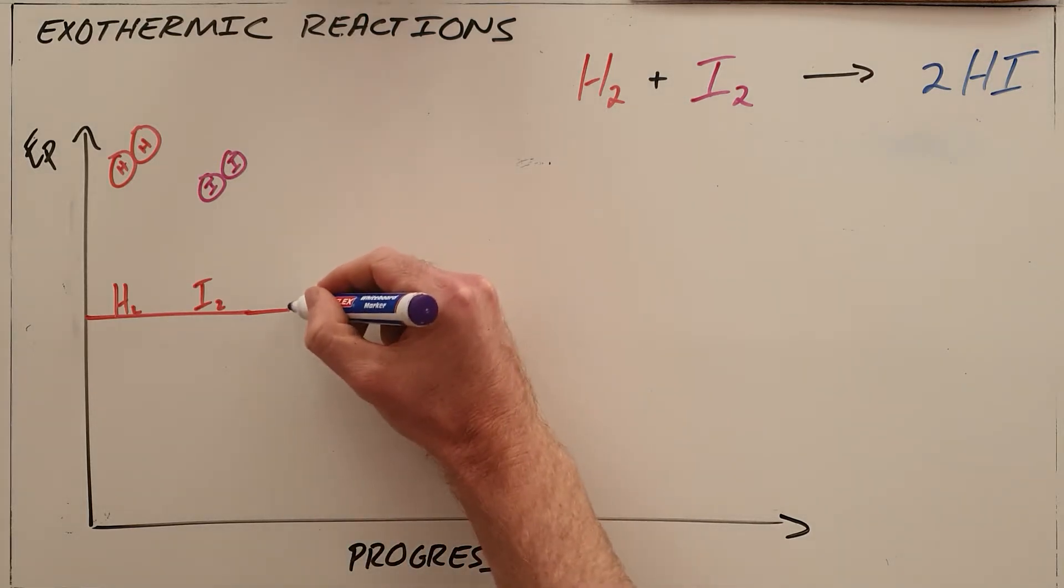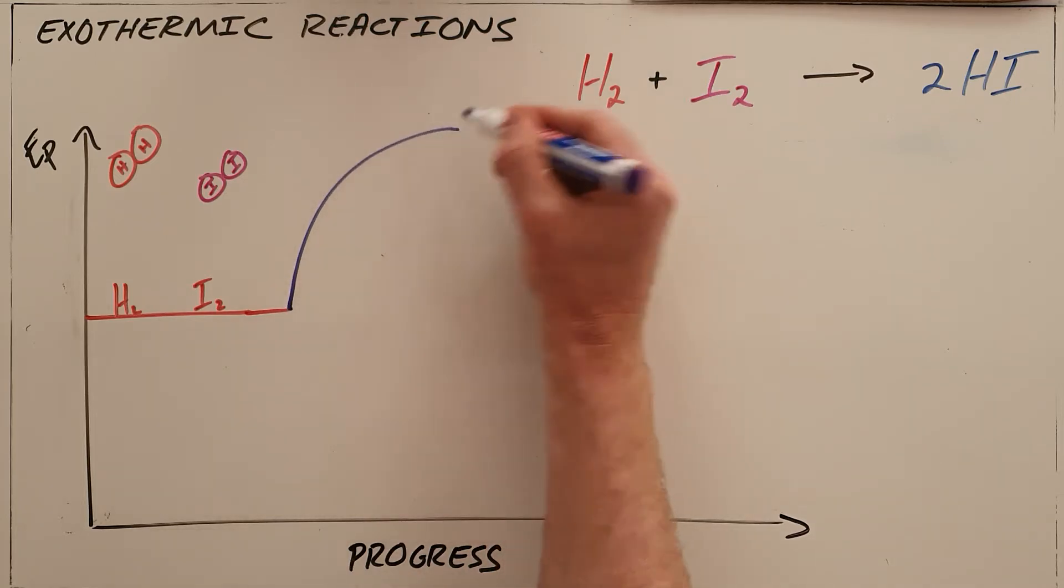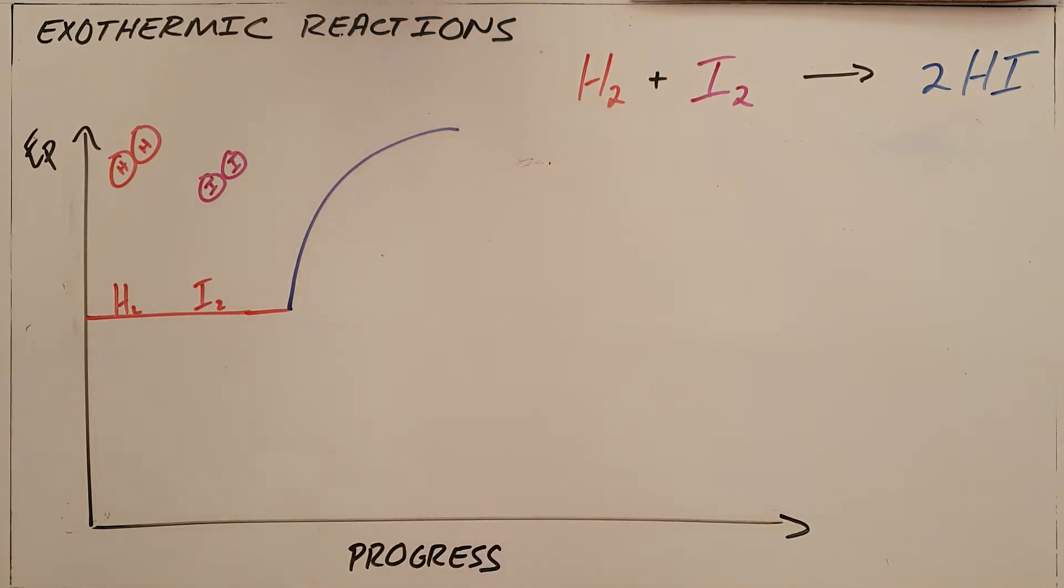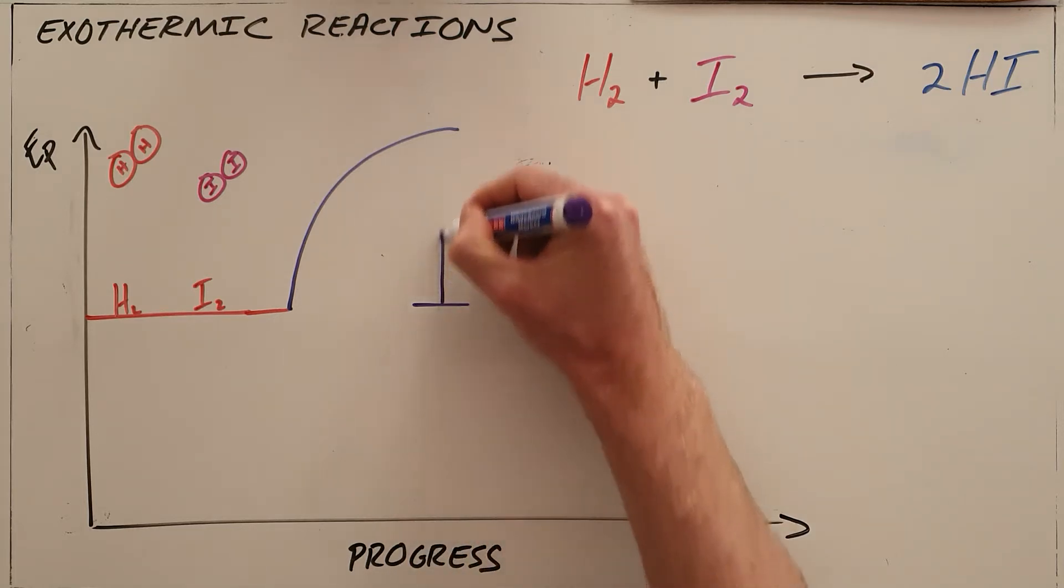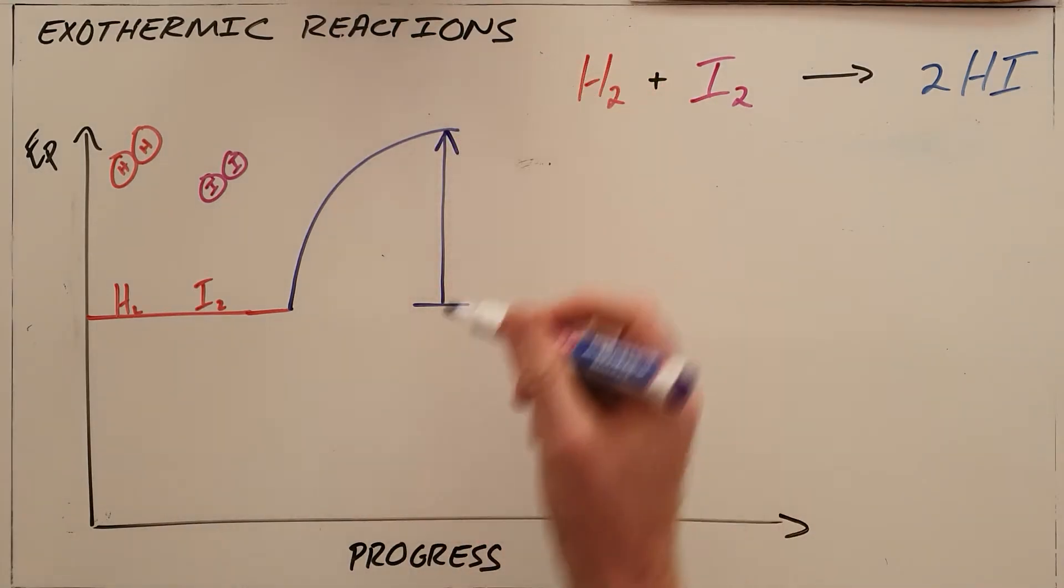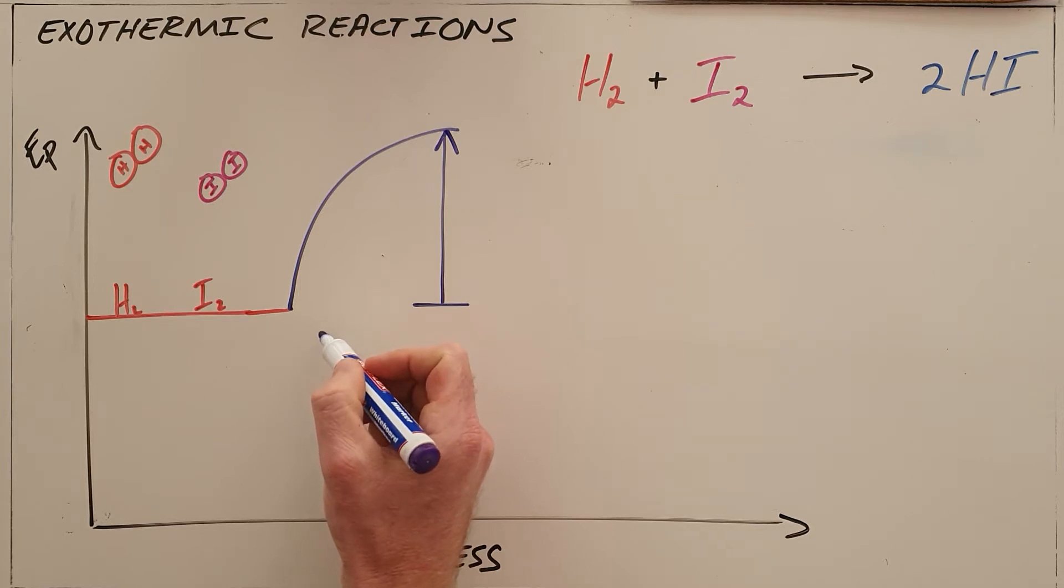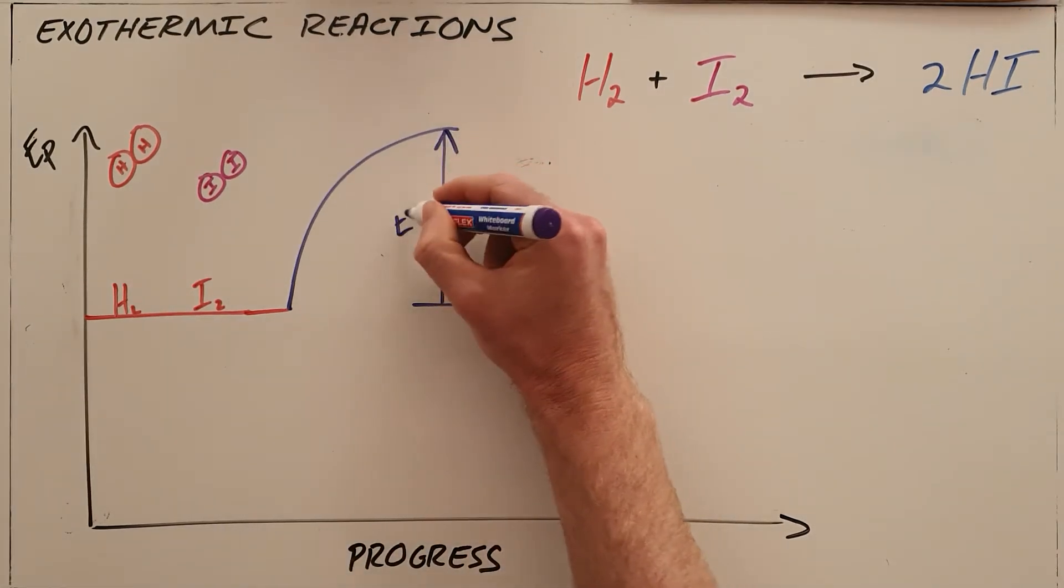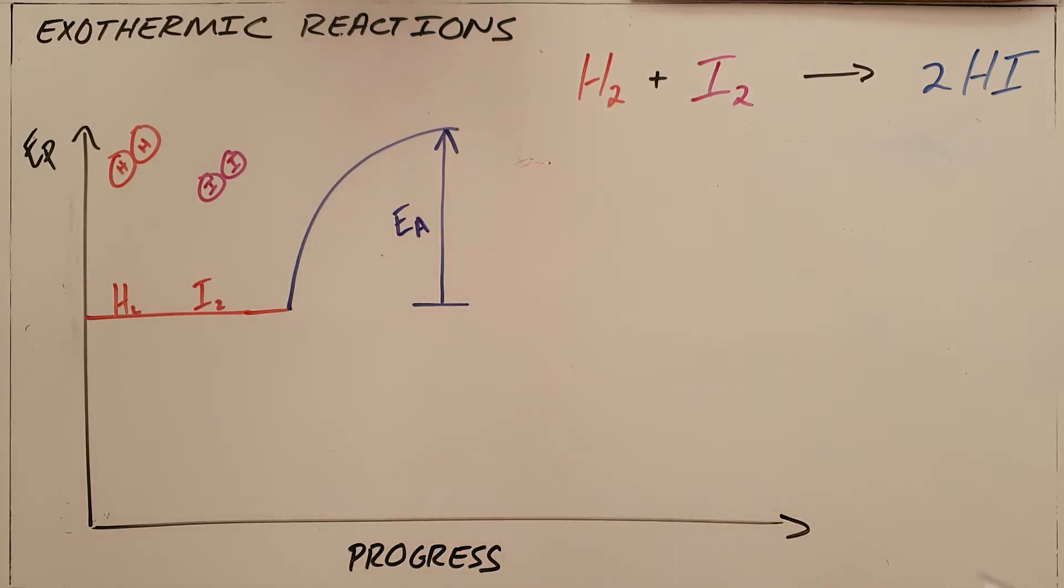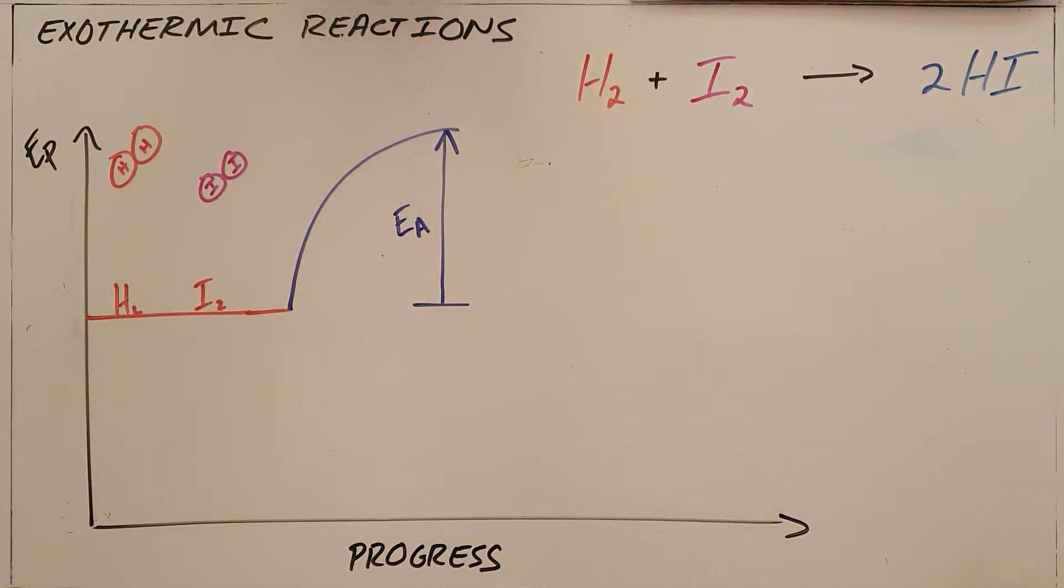So when that energy is supplied you can see that the potential energy would increase. We say that that amount of energy that is supplied, the amount of energy from the energy of the reactants to the maximum amount of energy, is known as the activation energy, which is the energy required for a reaction to start.